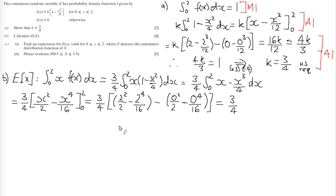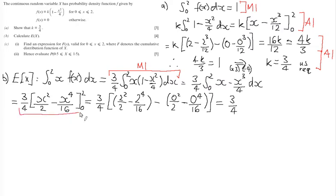For the marks in Part B: a method mark for correctly setting up the expectation integral, an accuracy mark for correctly integrating to the right expression, and a final accuracy mark for arriving at the answer of three quarters.